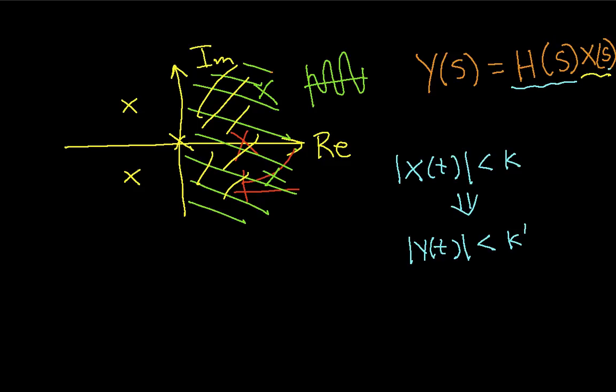We know that the poles of y, of y of s, will be the combination of the poles of x of s and of h of s. Because we're multiplying the two Laplace transforms, unless there's cancellation of a pole by a zero, then all of the poles of y of s will be the poles of h and the poles of x. So, in order for y to have no poles over in the right-half plane,